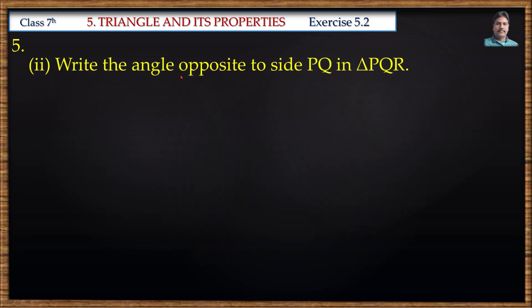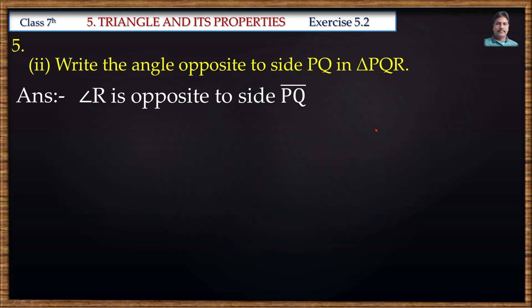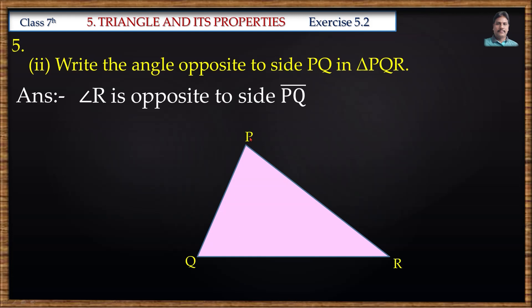Write the angle opposite to side PQ in triangle PQR. The answer is angle R, which is opposite to side PQ. See this picture — this is triangle PQR, this is side PQ, and opposite to side PQ is angle R.